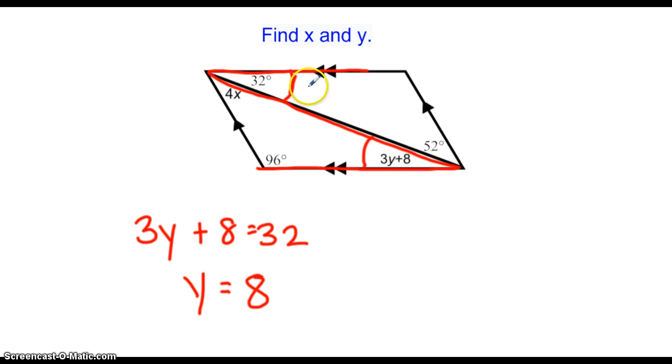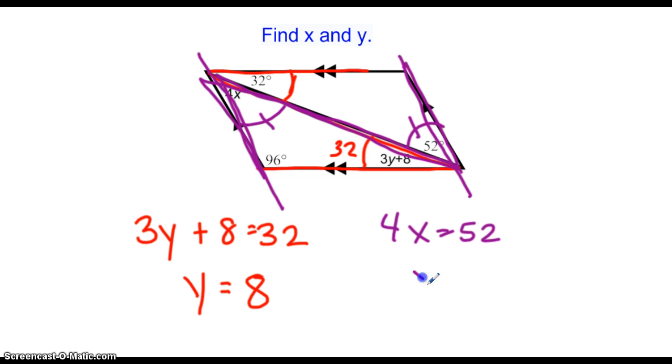All right. So we know that this is 32. We know that this is 32. And we also have another parallel line, right? We have another set of parallels. So this line here is parallel with this one here. Well, again, there's my transversal. They're sharing this transversal. So we have one of our z angles, but now going a little sideways, right? So this angle is congruent to this one. So 4x equals 52. So then we know that x is 13.